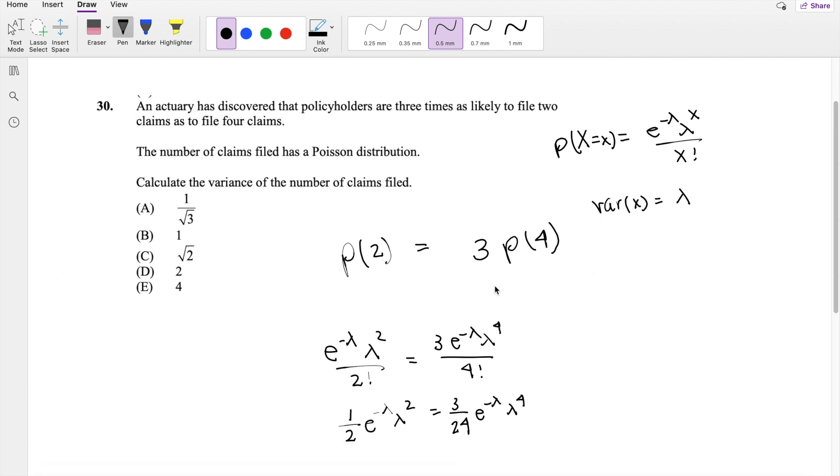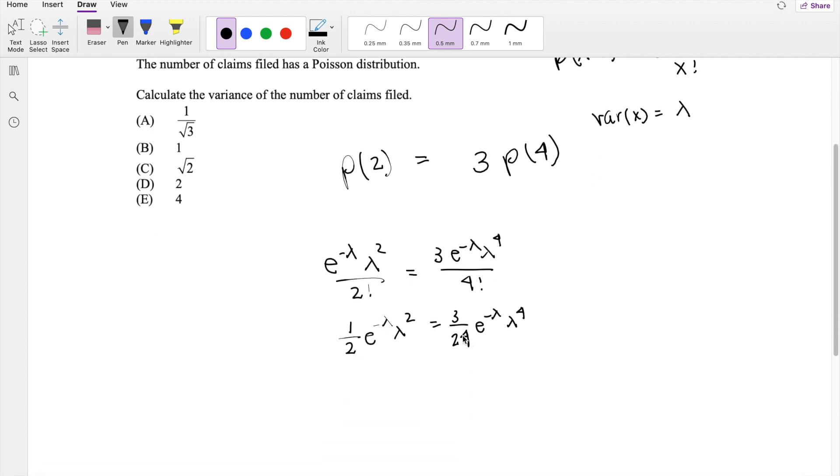So I'm actually going to send the one-half to the other side and divide both sides by this. So you get e to the negative lambda, lambda squared, over e to the negative lambda, lambda to the fourth, is equal to three over 24 times two, right? So then this will just become 12. And then we can divide this two and what's left over is just four.